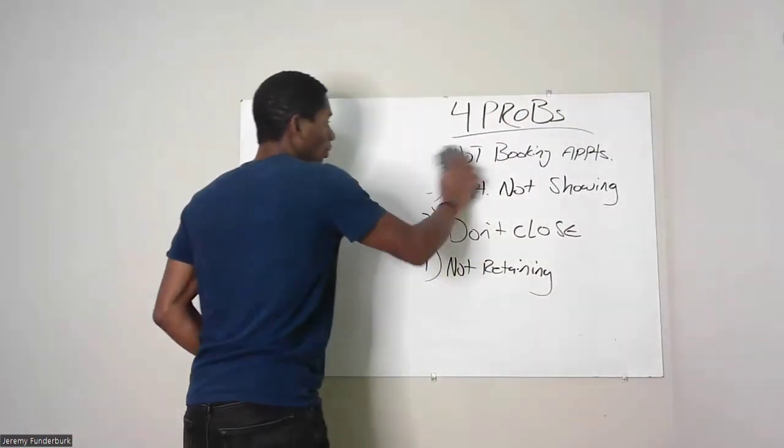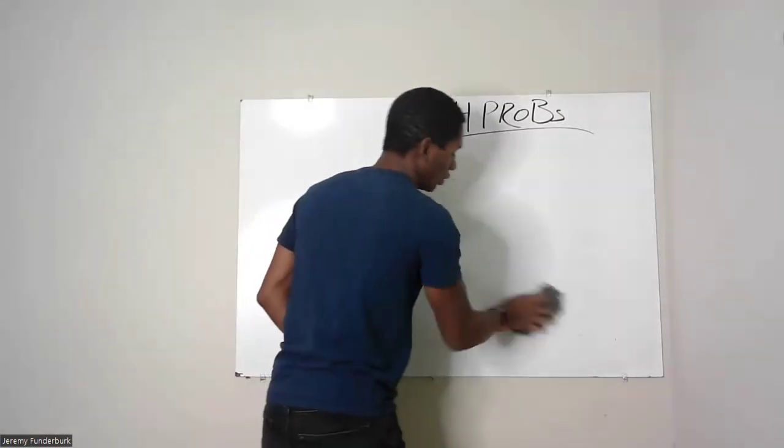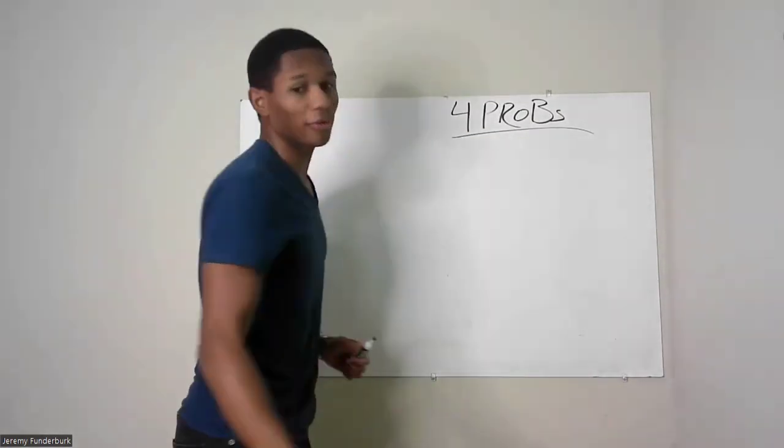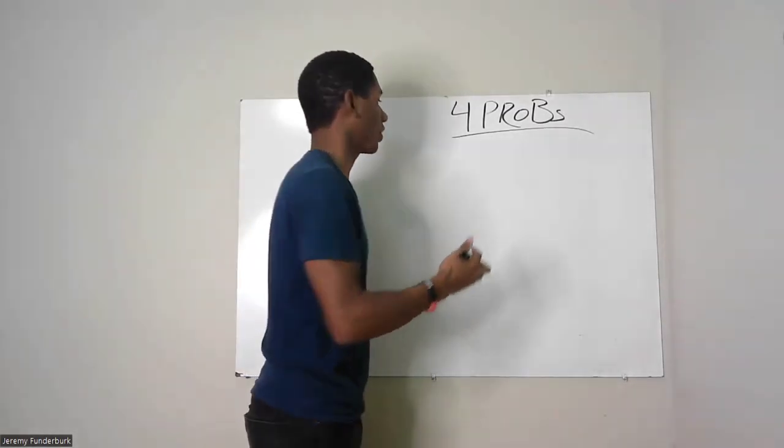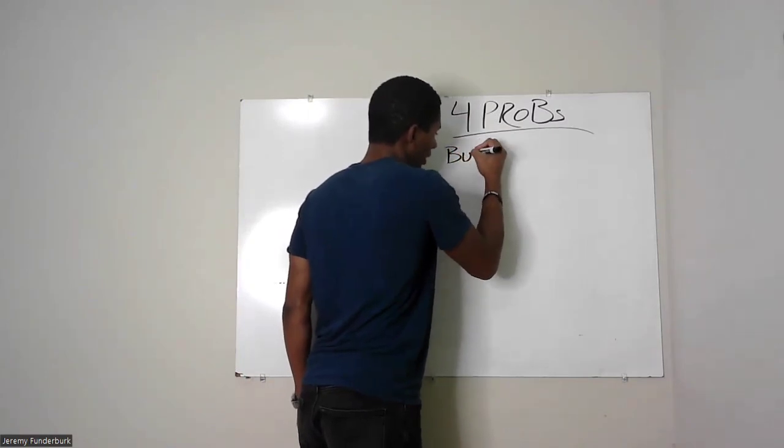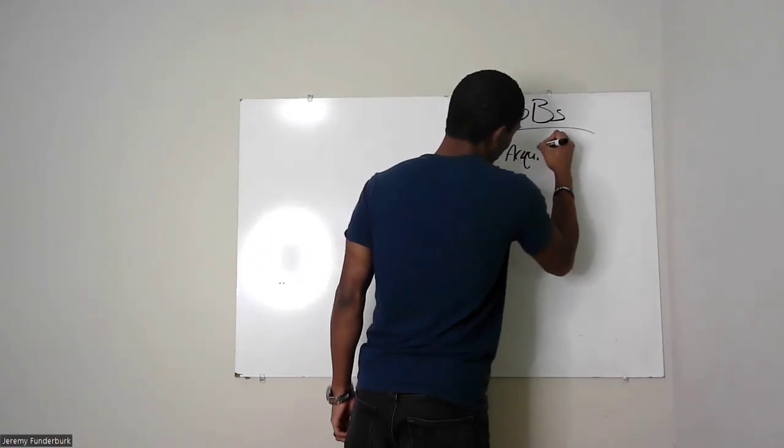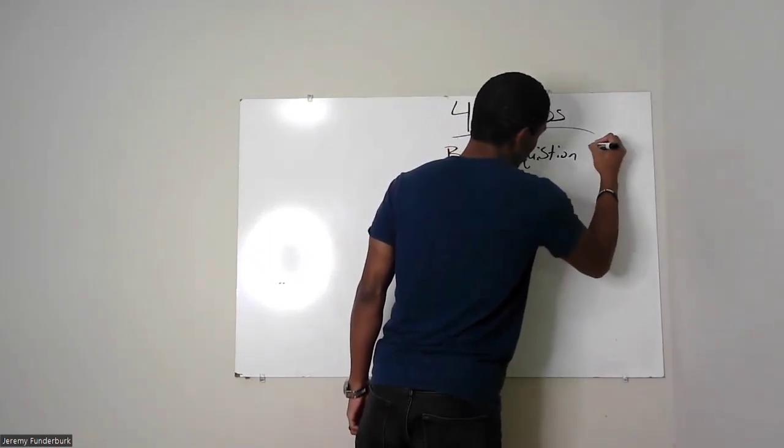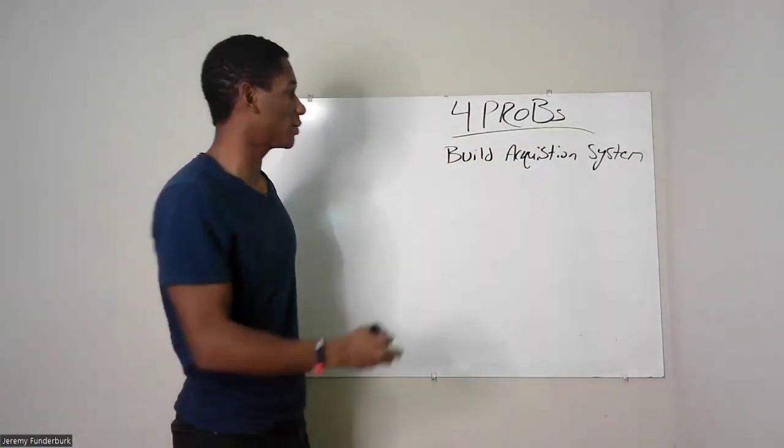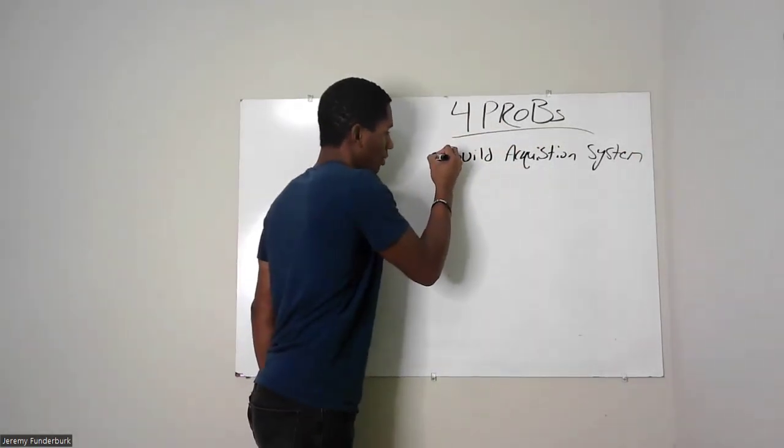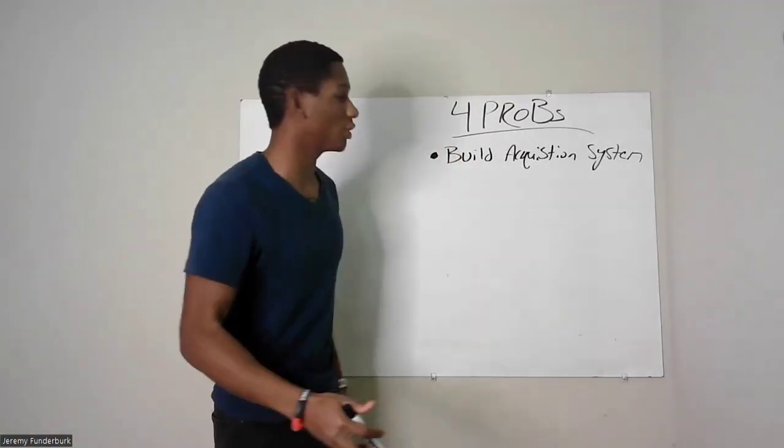So if you want to have a strong six-figure, multiple six-figure agency, you got to learn how to solve those first two problems. So this is how you're going to solve those. What you're going to do is you are going to build an acquisition system. You're going to build your client acquisition system. This is how you're going to solve problems one and two. How are you going to do that? There's a couple key parts you're going to need to put in place.